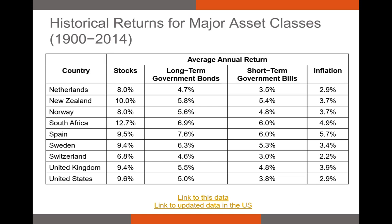I collected data from BlackRock covering 1900 through 2014. For the United States, stocks have historically outperformed long-term bonds, which have outperformed short-term government bonds, which have outperformed inflation. This is a phenomenon we talk about all the time in finance: stocks have higher risk, and therefore investors demand higher compensation than bond investors. The difference between long-term and short-term bonds is about 1.2% annually over this 115-year period — that's significant.